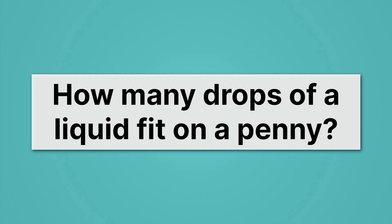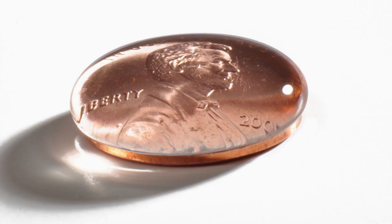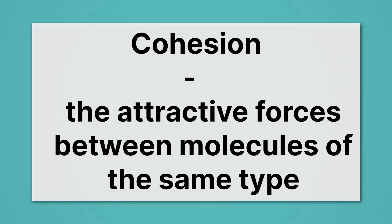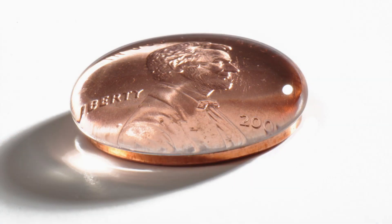Remember, in this lab we're going to ask how many drops of a liquid fit on a penny. We already took a look at this penny and saw how tons of water droplets fit on there. The reason there's so much water that can stay on there is because the water molecules are sticky — they're attracted to each other via hydrogen bonding. This has a special name: cohesion. Cohesion is the attractive forces between molecules of the same type, and that's what allows them to hang over the edge.